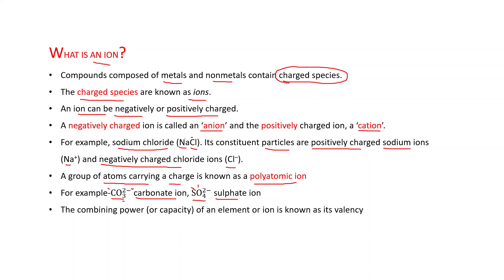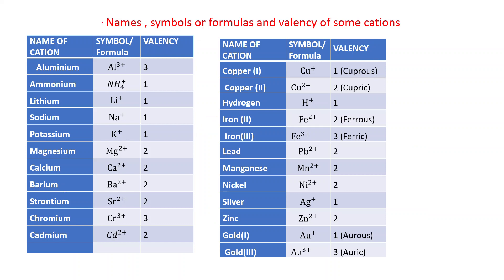The combining power or capacity of an element or ion is known as its valency. Now, these are the names, symbols or formulas, and valency of some cations. Cations means positively charged ions, and you have to memorize all these things. These are very important.